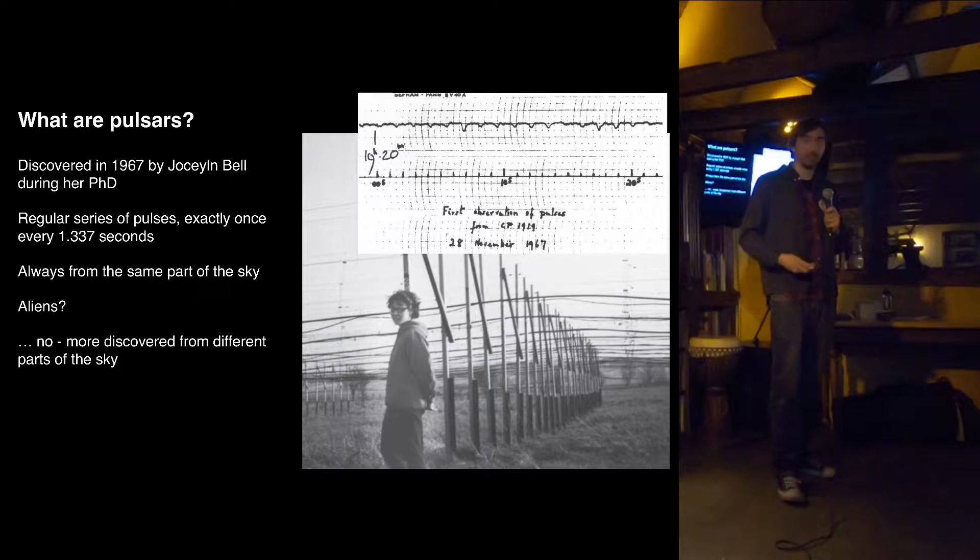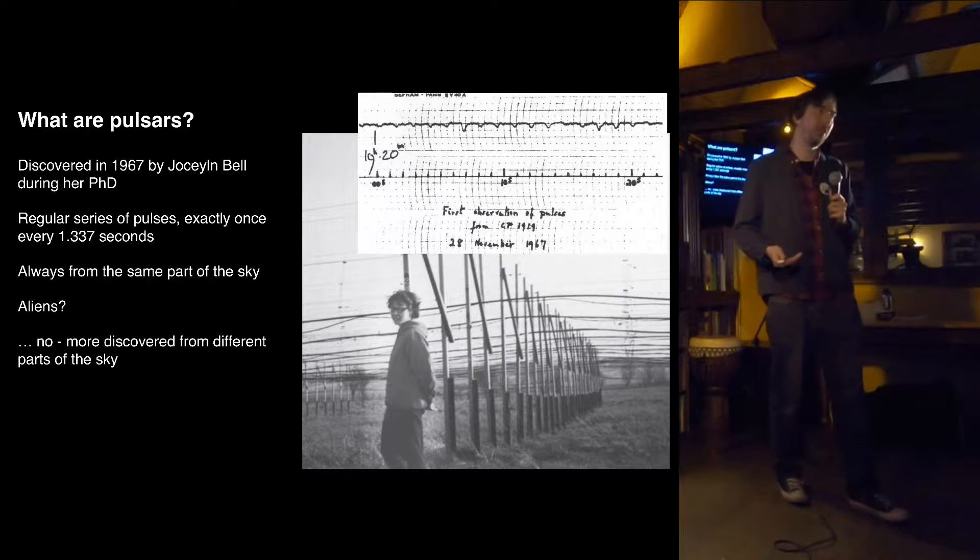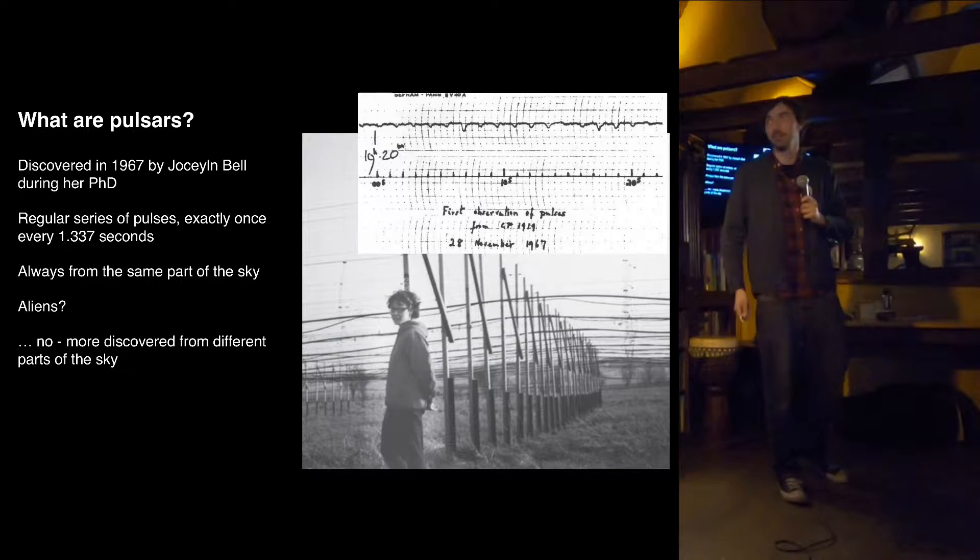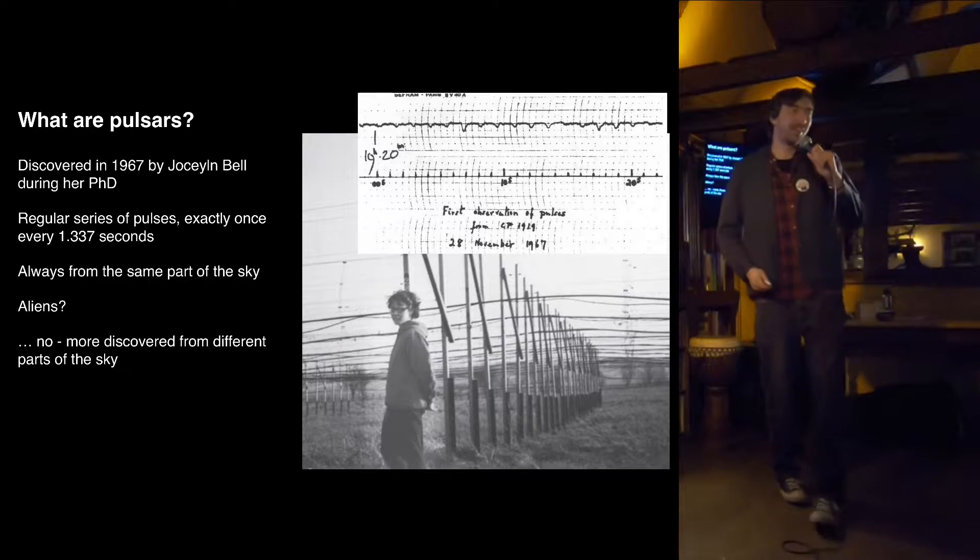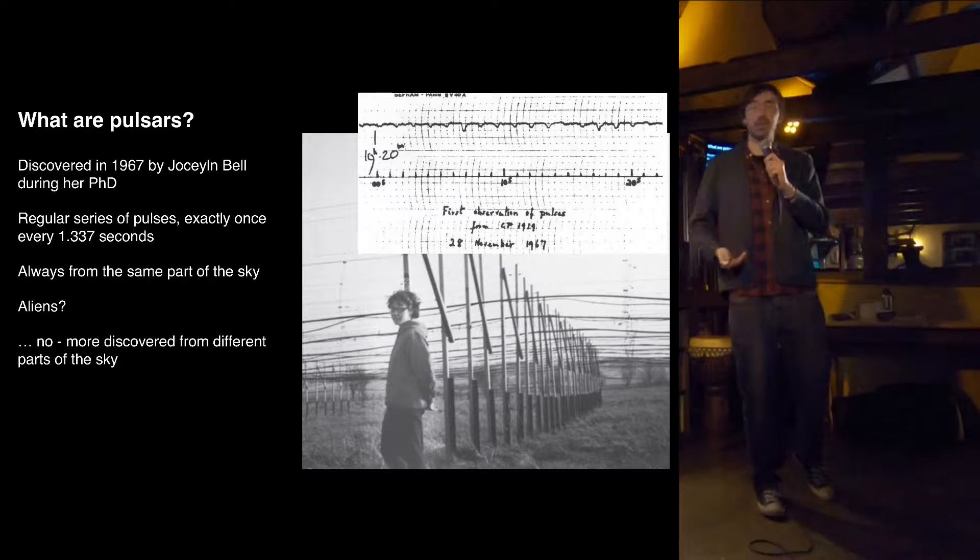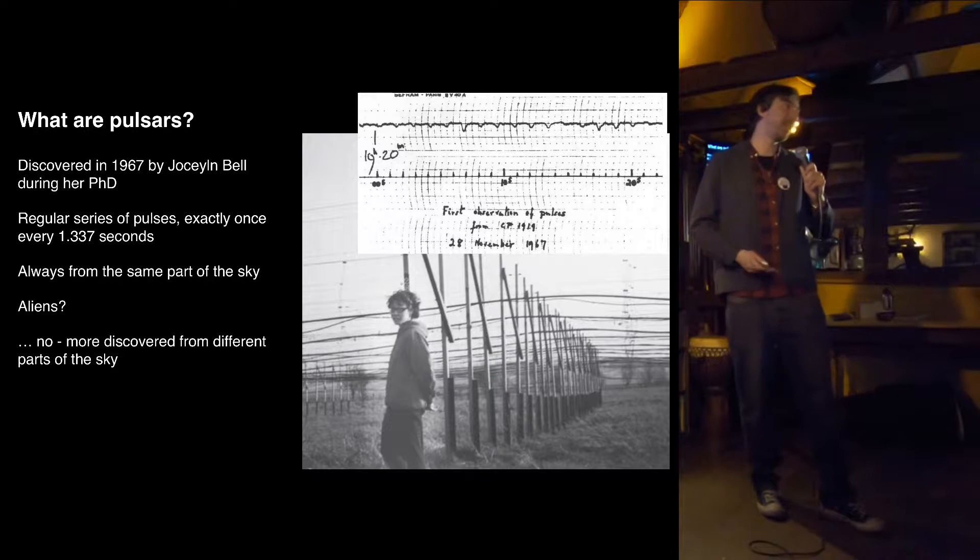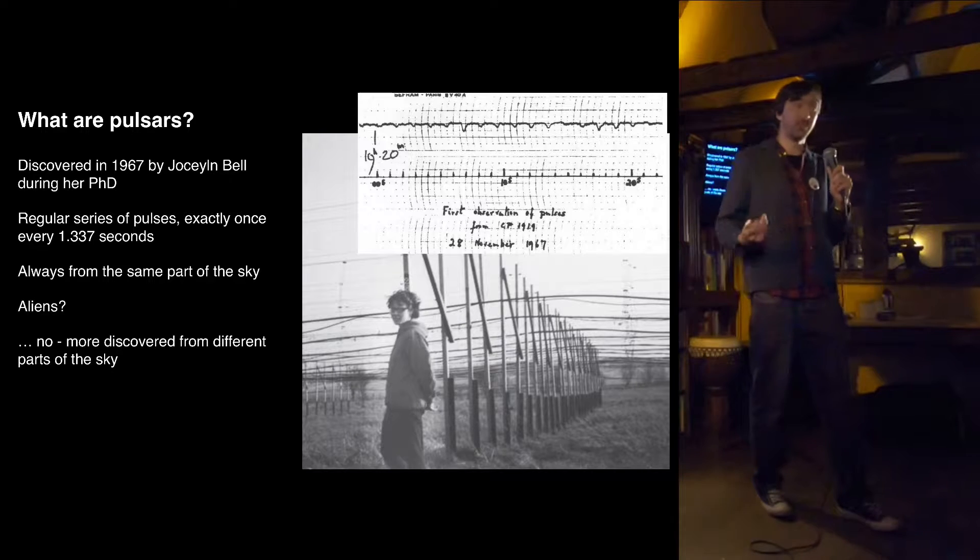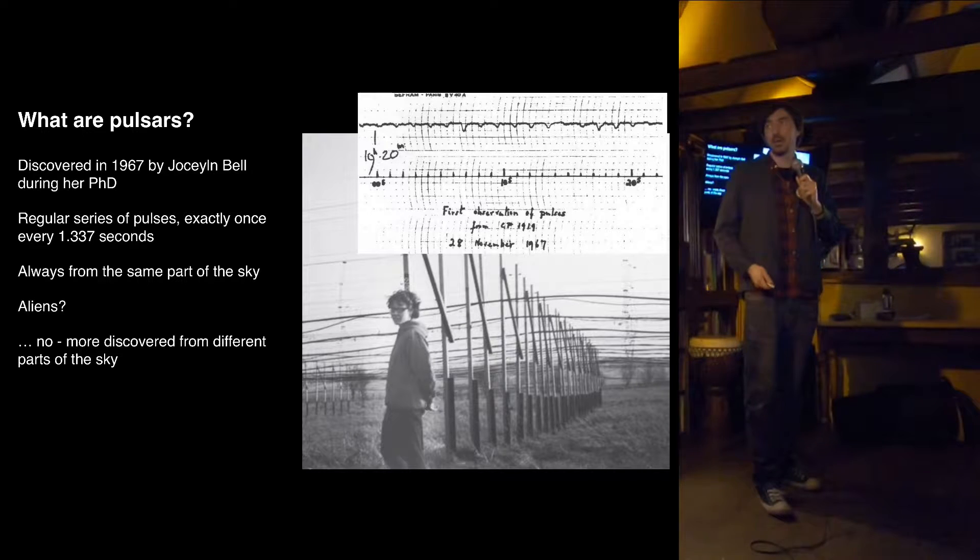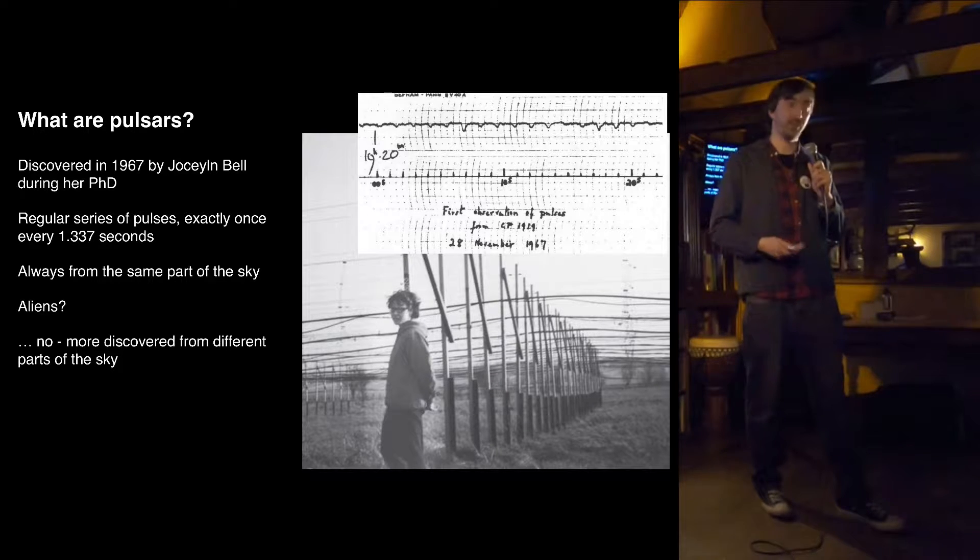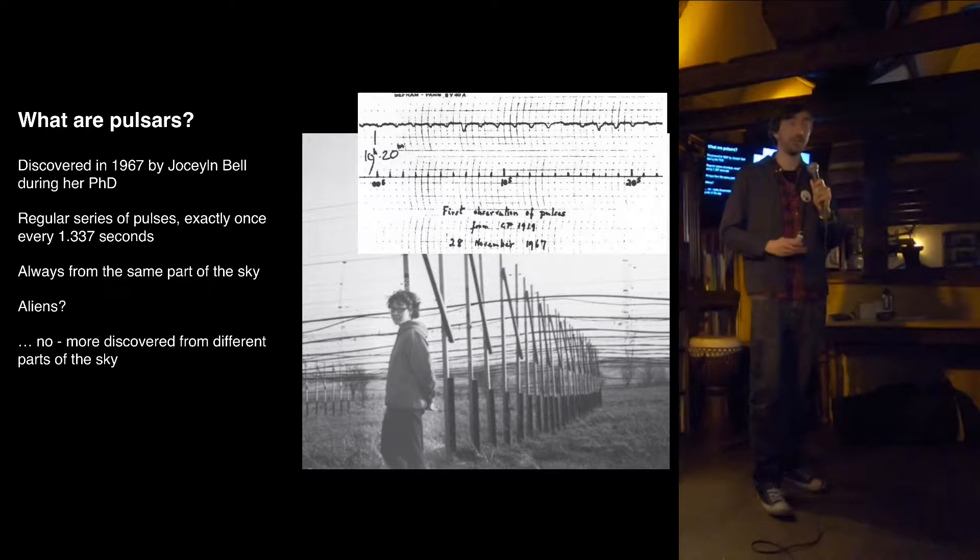So at first, people thought this must be some man-made interference. It must be like a radar or something like that, maybe at the military base, maybe at the airport. They decided that it couldn't be man-made, though, because this signal actually rotated with the sky. If you waited until 12 hours later when the Earth was pointing at the opposite side of the sky, you wouldn't see this. And then exactly at the same time of the day, you point your telescope, and there it is, the same periodic signal. So it was definitely coming from space.